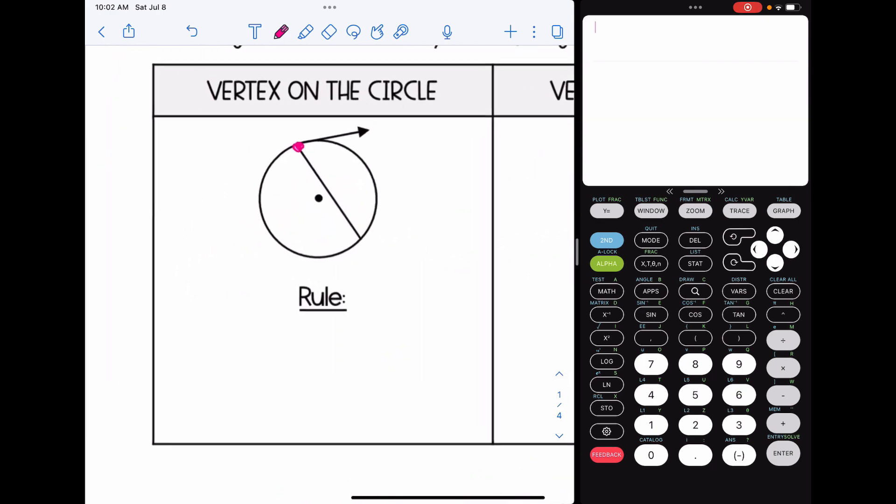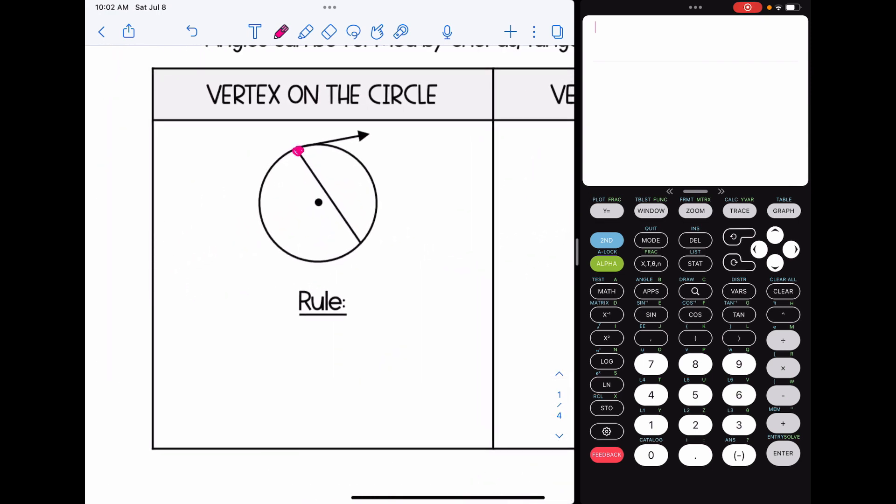Let's start with if the vertex is on the circle. This looks a little similar to the inscribed angles. The difference with the inscribed angles is it was formed by two chords, whereas this is formed by a chord and a tangent. But the rule is actually the same rule for inscribed angles. It's basically half the intercepted arc. For instance, in this picture, let's say that this arc was 140 degrees, this angle would be 70 degrees, it would be half its measure.